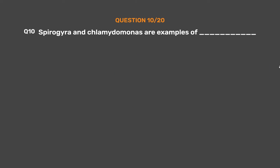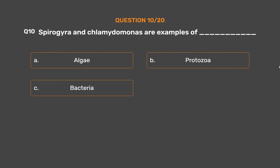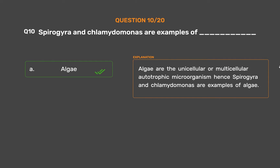Question number 10. Spirogyra and Chlamydomonas are examples of which microorganism? Option A: Algae. Option B: Protozoa. Option C: Bacteria. Option D: Fungi. The correct answer is Option A, Algae. Algae are the unicellular or multicellular autotrophic microorganism. Hence, Spirogyra and Chlamydomonas are examples of algae.